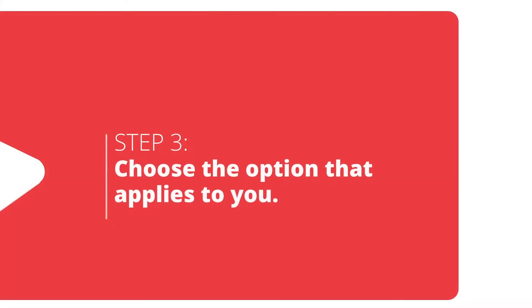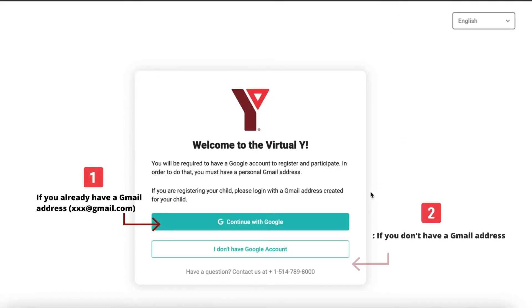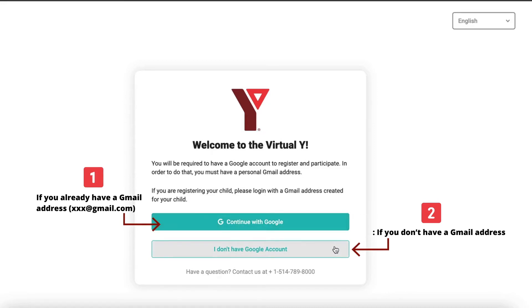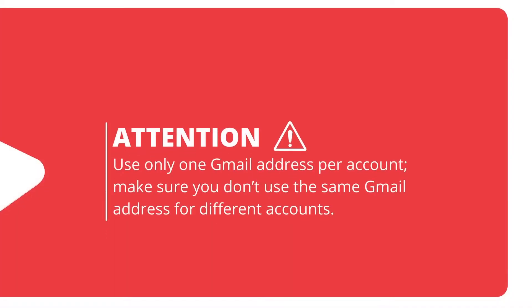You need a Gmail address to register. Choose the option that applies to you. If you already have a Gmail address, click on Continue with Google. If you don't have a Gmail address, click on I don't have a Gmail address and create an account. It is important to use only one Gmail address per account — make sure you don't use the same Gmail address for different accounts.